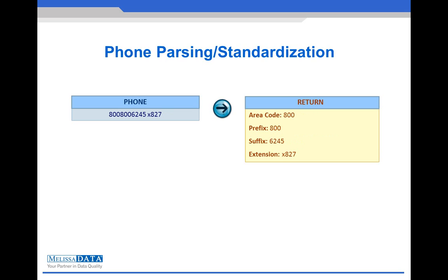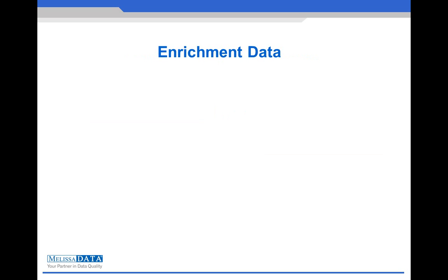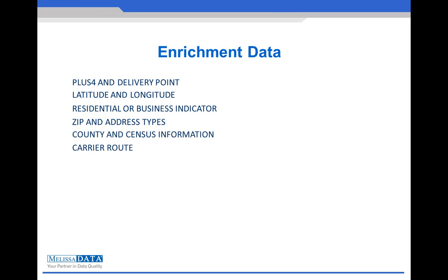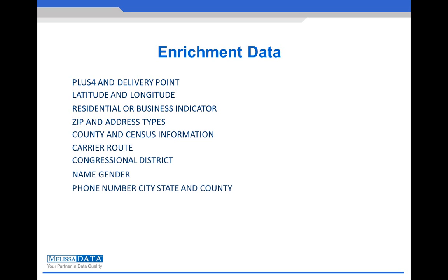On top of standardization, cleansing, and parsing, the data quality components also give you a variety of enrichment information about your data. This enrichment information not only fills in the holes and gaps in your database, but also gives you even more information on the data you already have. Useful enrichment outputs include the plus-4 and delivery point of an address, latitude and longitude, residential or business address indicator, zip and address types, county and census information, carrier route, congressional district, name gender, phone number city and state and county location, email address top-level domain description, and more.